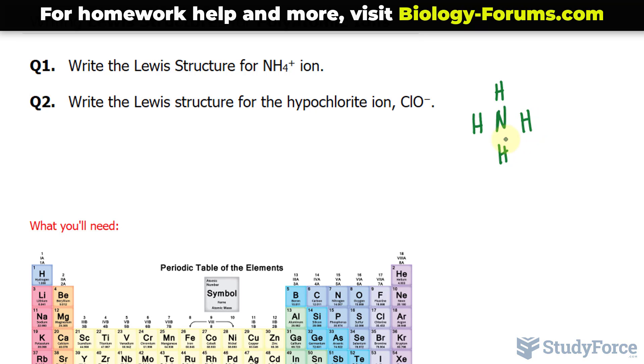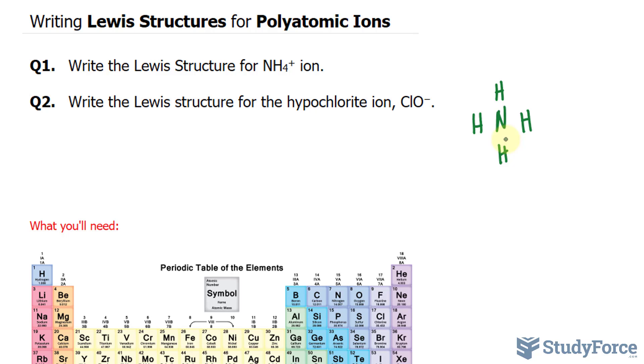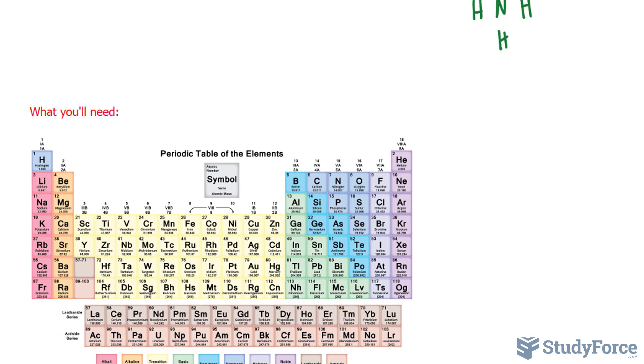The next thing that you want to do is calculate the valence electrons for hydrogen and the valence electrons for nitrogen. And for that, I have the periodic table underneath. Notice that nitrogen is in the fifth column. That suggests five valence electrons. And hydrogen is in the first. That's one.